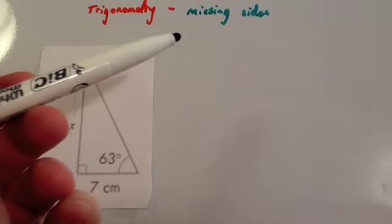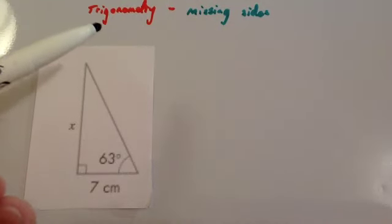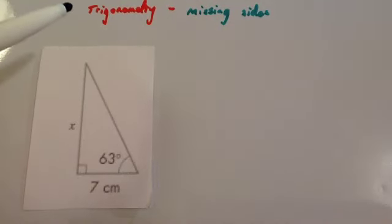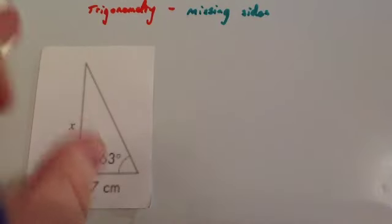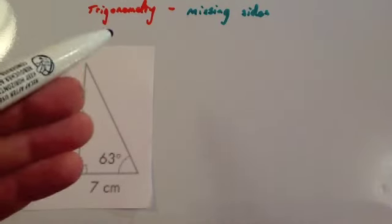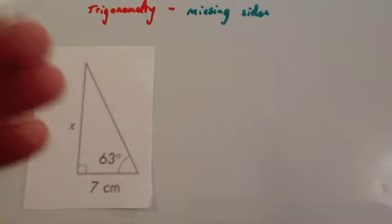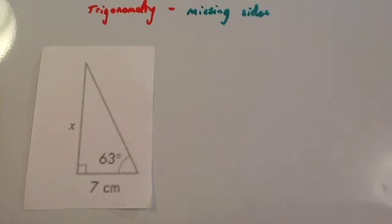We're now going to look at how to find missing sides from right-angled triangles using trigonometry. Before you watch this video, definitely watch the video 'Trigonometry Introduction' to find out all the different things I'm going to be talking about — how to label sides and angles, that sort of thing.